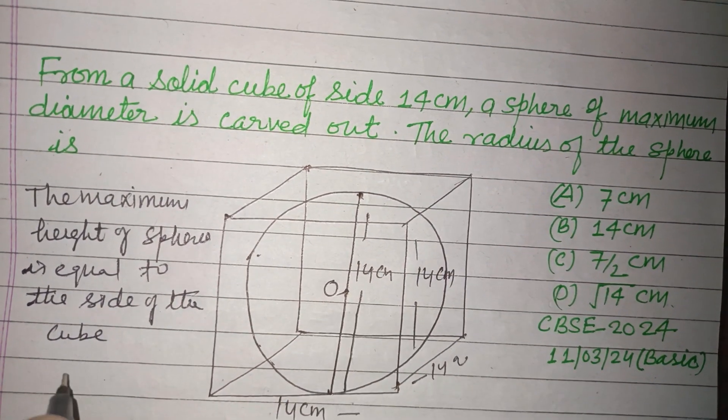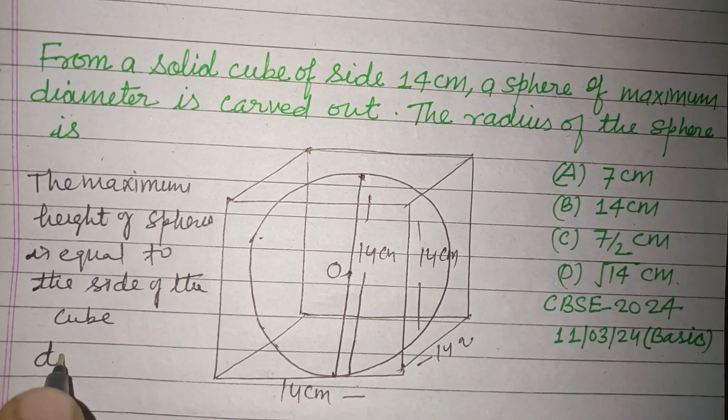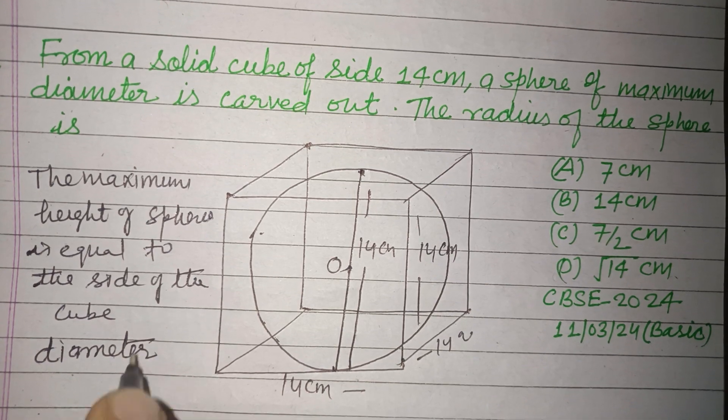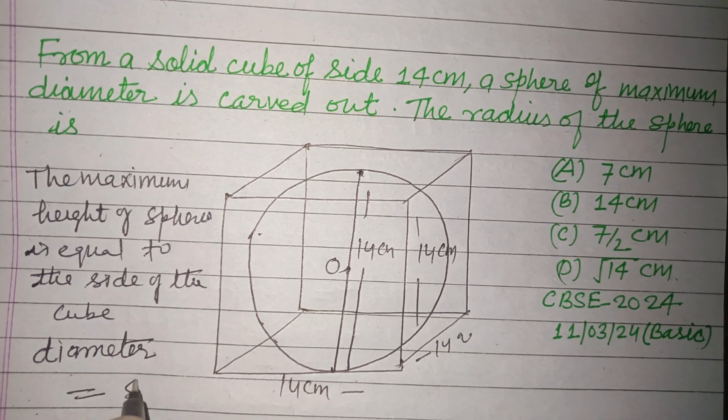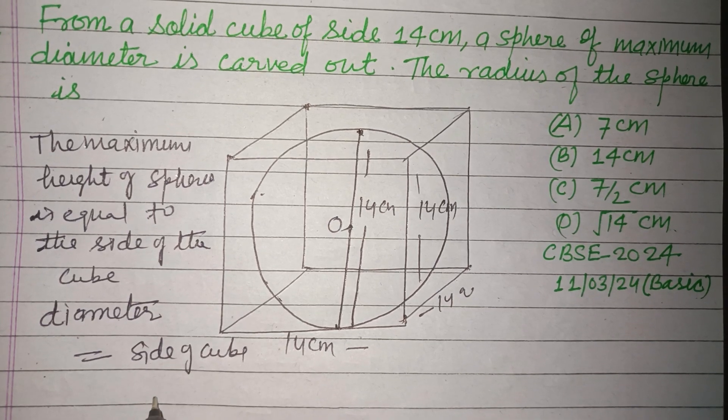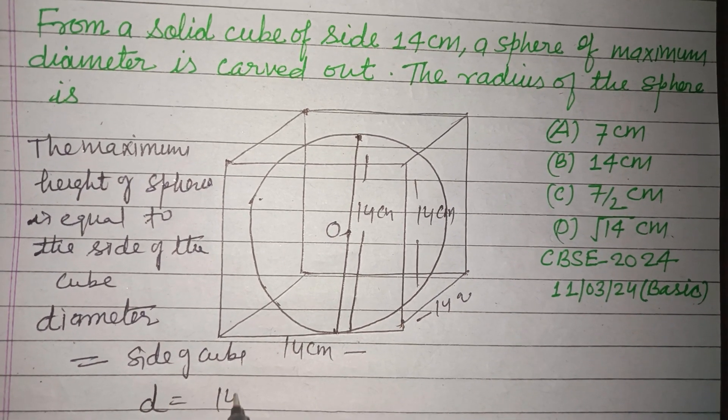Therefore, this maximum height is called the diameter. So diameter equals the side of the cube. So d equals 14 cm.